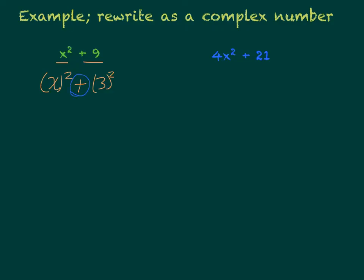so it's not a difference of squares. So we're going to apply this sum of squares rule, and we take our a term, which is our x, or it's a plus bi and a minus bi.